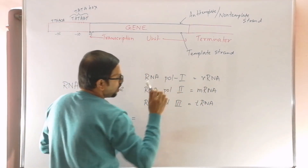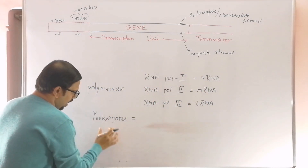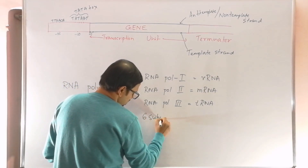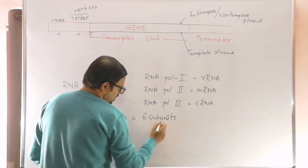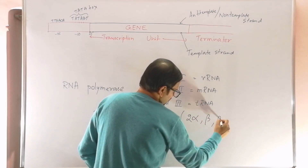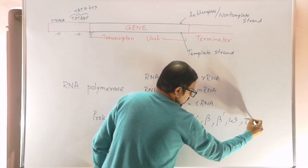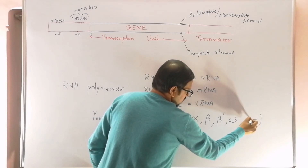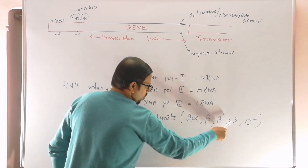In prokaryotes, only one RNA polymerase is present, which transcribes all the different species of RNA. The RNA polymerase of prokaryotes is composed of 6 subunits: 2 alpha, 1 beta, 1 beta prime, 1 omega, and 1 sigma.